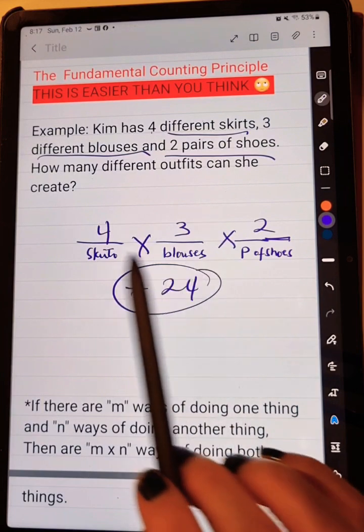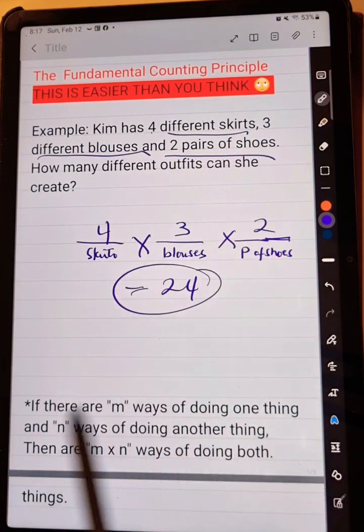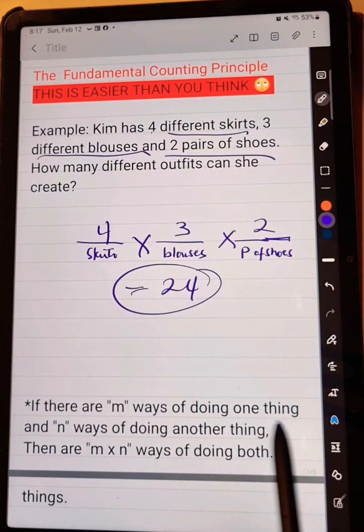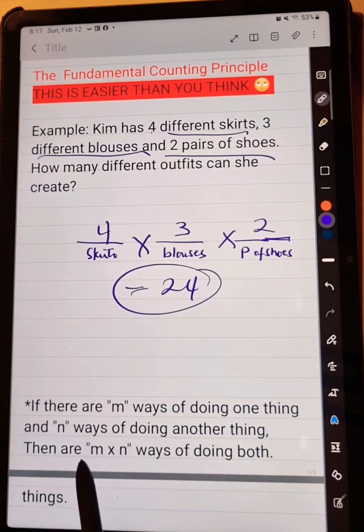Now, what do you mean by fundamental counting principle? It says that if there are M ways of doing one thing and N ways of doing another thing, then M times N ways of doing both.